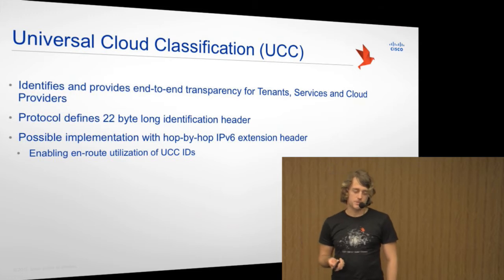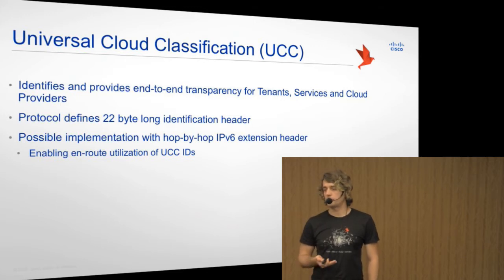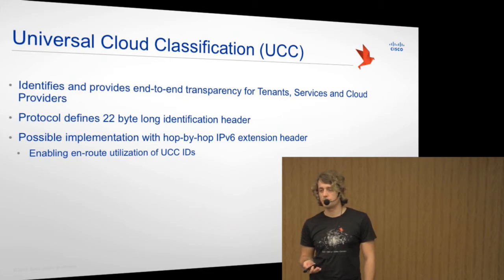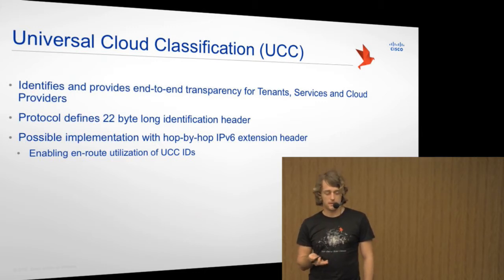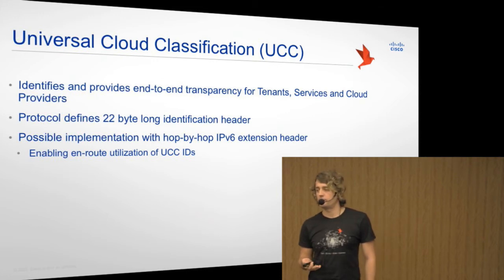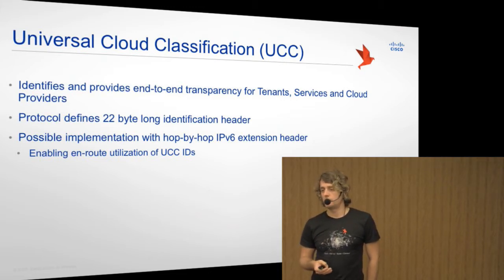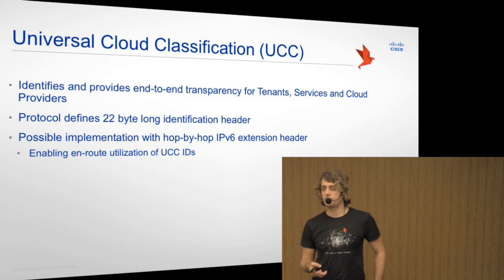What I did in my research is focus on how to actually identify tenants, services and providers on layer 3 in the network. Tenants here is not a project as we know it from OpenStack, but more of a consumer of a service. The idea is to introduce an extension header for IPv6 that is 22 bytes long. We have 4 bytes for the cloud ID, 6 bytes for the tenant and 6 bytes for the service ID. Each of those IDs also has a length field and a flag field that can be used to define certain behaviors on route. The proposal is to use a hop-by-hop extension header which can then be used by all devices on route for certain inspection types — for example, to apply quality of service for a specific tenant in a specific service.